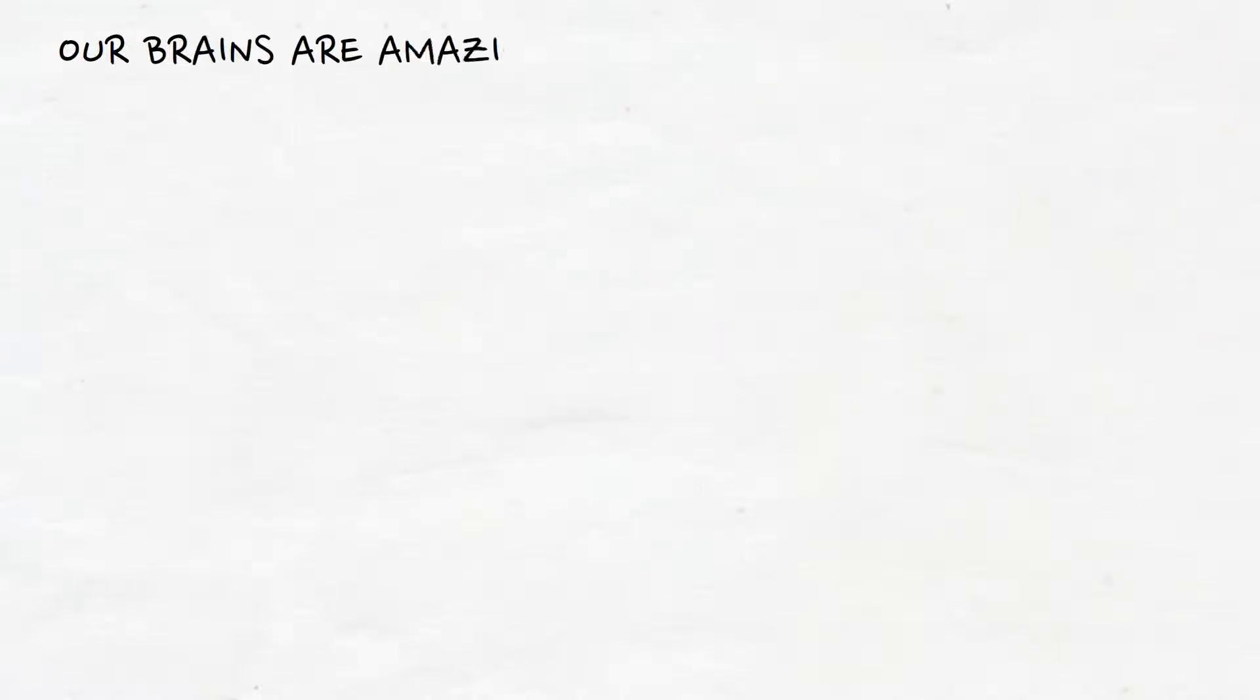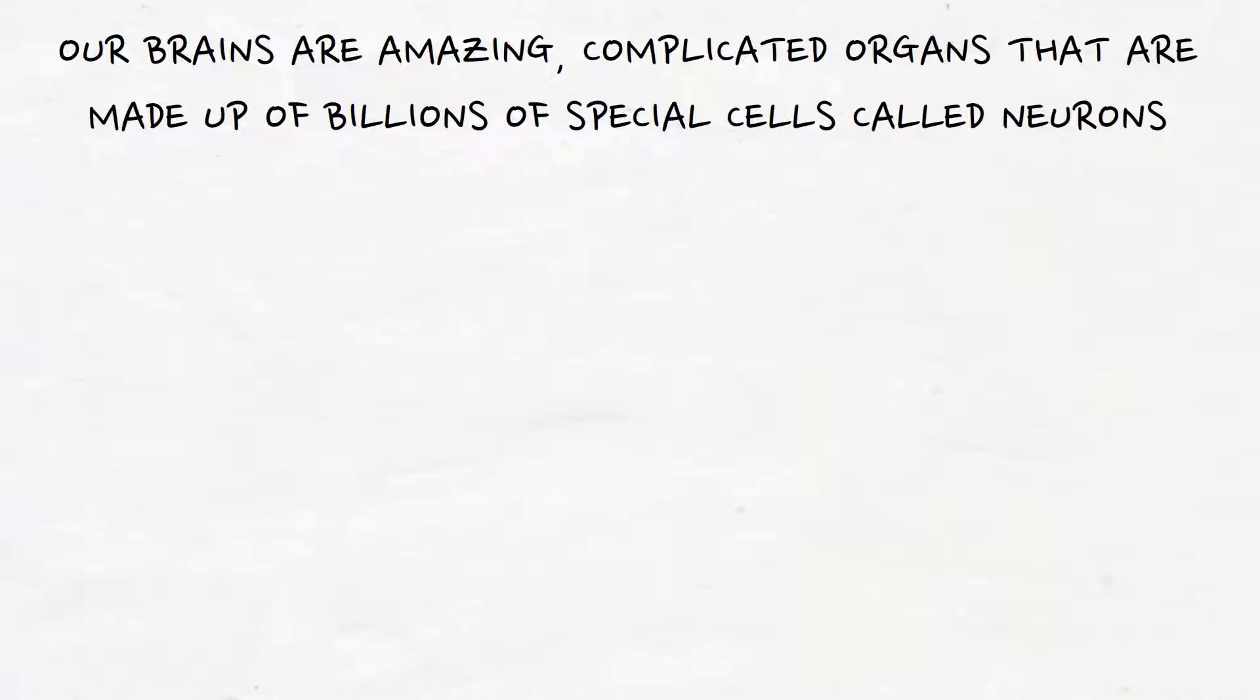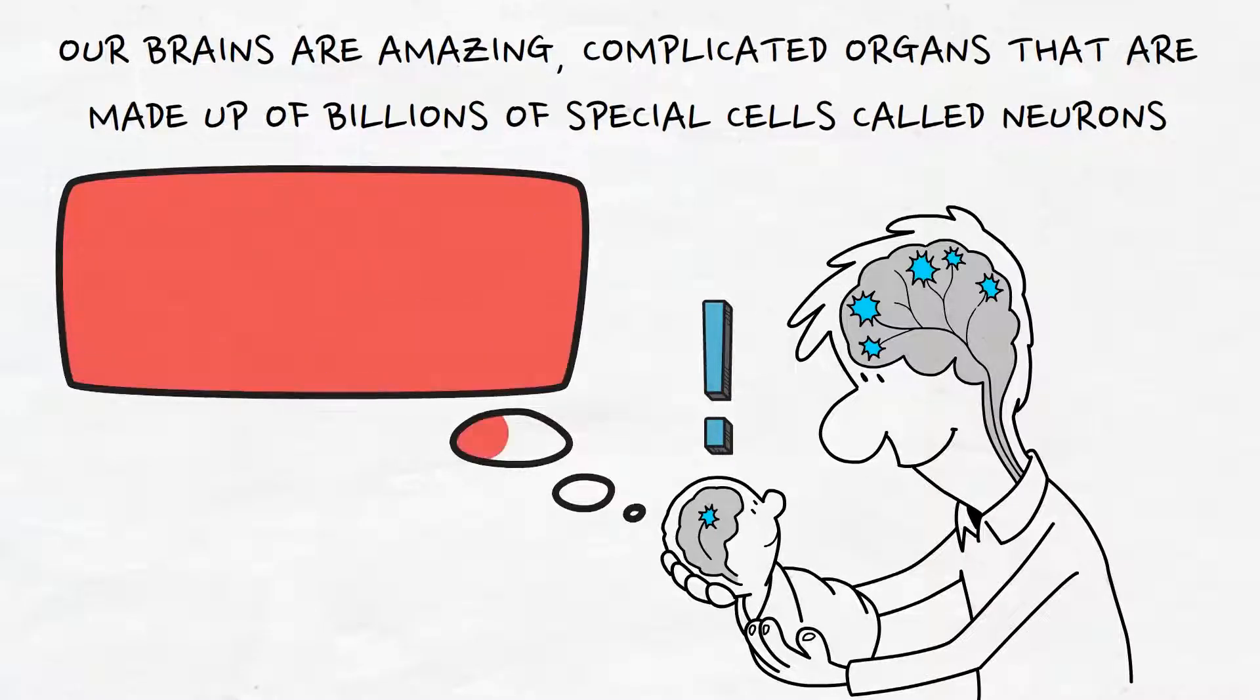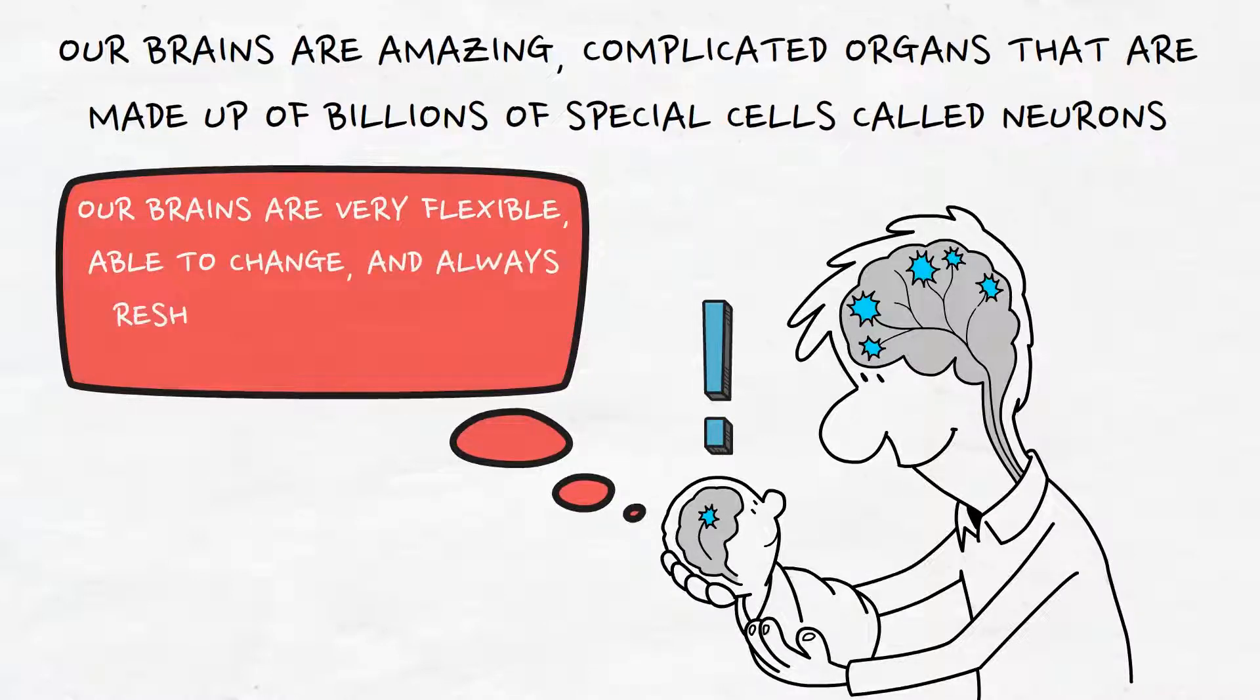Our brains are amazing, complicated organs that are made up of billions of special cells called neurons. People thought for a long time that our brains were set from birth and could not change. But new research has shown that isn't true. Our brains are very flexible, able to change, and always reshaping themselves as we go through life.